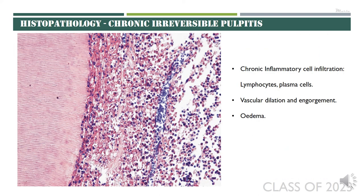The chronic phase of pulpitis will show a majority of chronic inflammatory cells — basically lymphocytes and plasma cells. Lymphocytes are identified by the dark, kidney-shaped nucleus and are smaller in size. Plasma cells will have a larger cell body and will show a peripheral cartwheel appearance, requiring a high-power view to appreciate. In addition, there will be vascular dilatation and numerous capillaries — you can see the engorgement of blood vessels — as well as edema within the pulpal tissue.